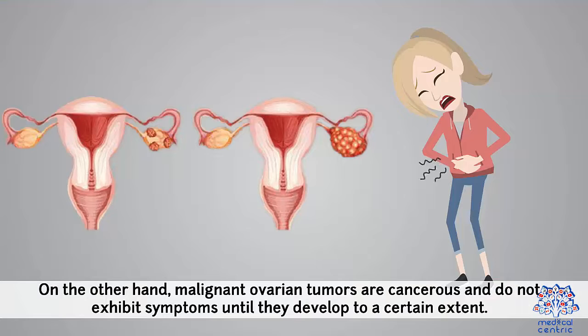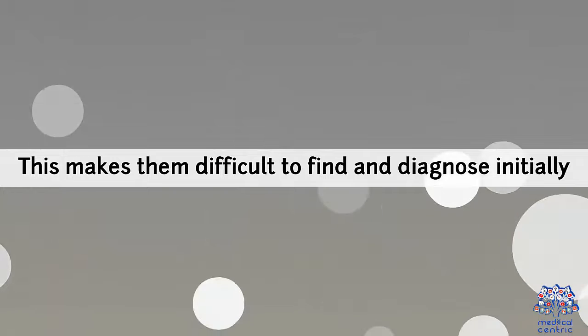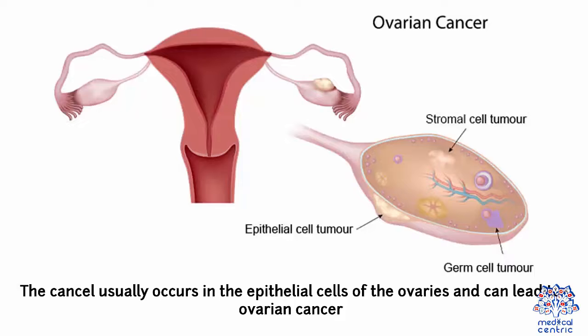On the other hand, malignant ovarian tumors are cancerous and do not exhibit symptoms until they develop to a certain extent. This makes them difficult to find and diagnose initially. The cancer usually occurs in the epithelial cells of the ovaries and can lead to ovarian cancer.